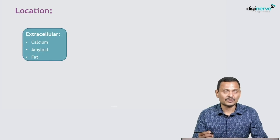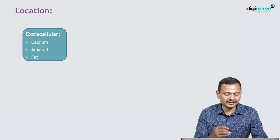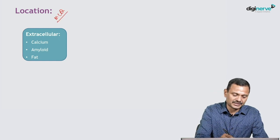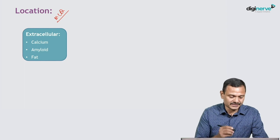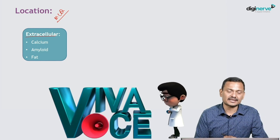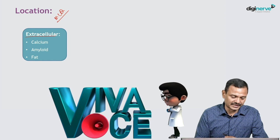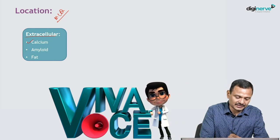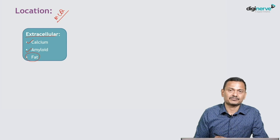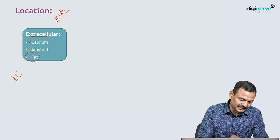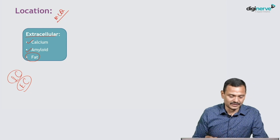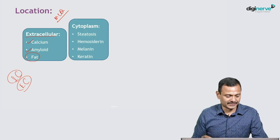Now we will see the location where these substances can be deposited — this is again important from an MCQ point of view. The first is extracellular, outside the cell. Things deposited extracellularly include calcium and amyloid — these are always extracellular. Fat can also be extracellular, but it can also be intracellular.